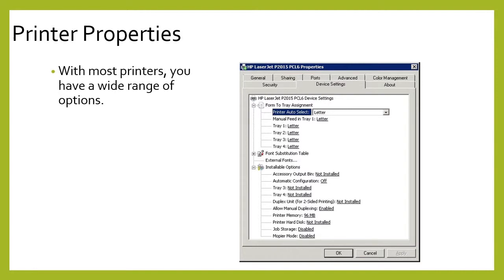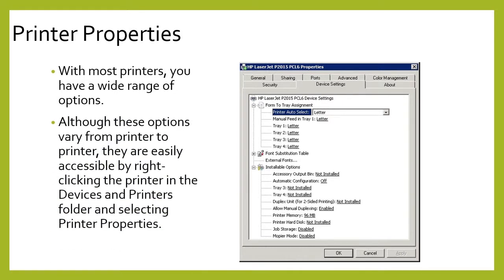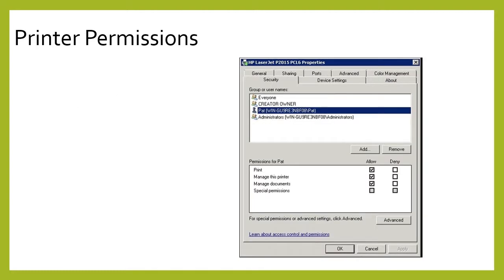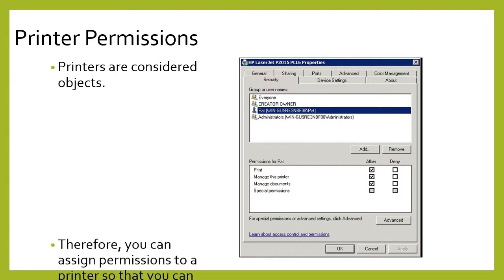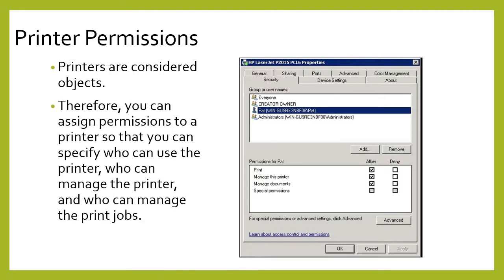Taking a look at printer properties: with most printers, you have a wide range of options. Although these options vary from printer to printer, they are easily accessible by right-clicking the printer in the Devices and Printers folder and selecting Printer Properties. Printers are considered objects, so you must assign permissions to determine who can use the printer, who can manage the printer, and who can manage print jobs.